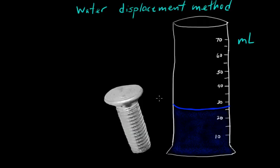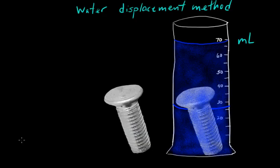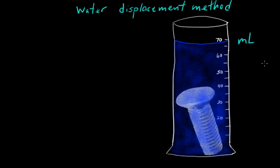What you're going to do is place this object of irregular shape into the known amount of water. Afterwards, let's say you place it in there. We see the water level rises because all matter takes up space. The bolt took up space inside this water that was in the graduated cylinder, and the water level rose to 65 milliliters.